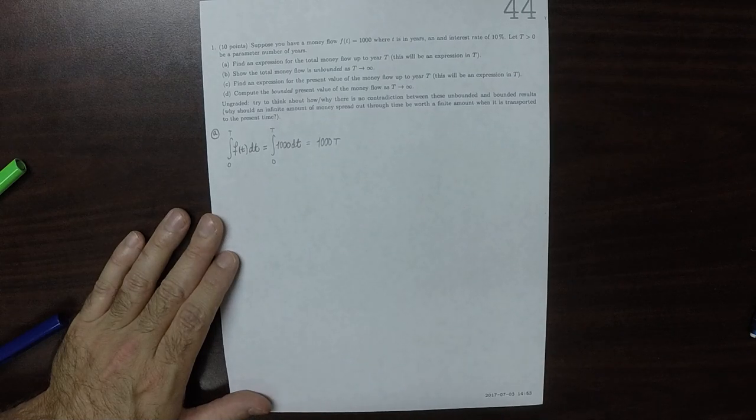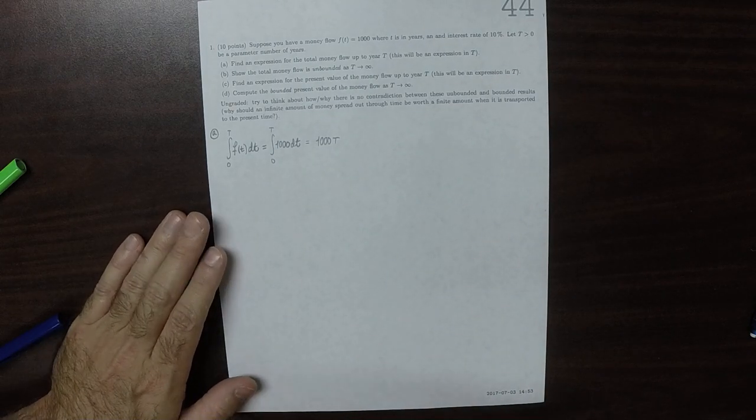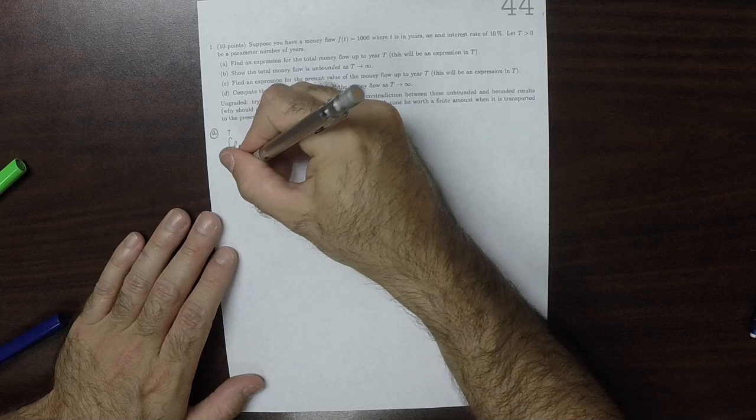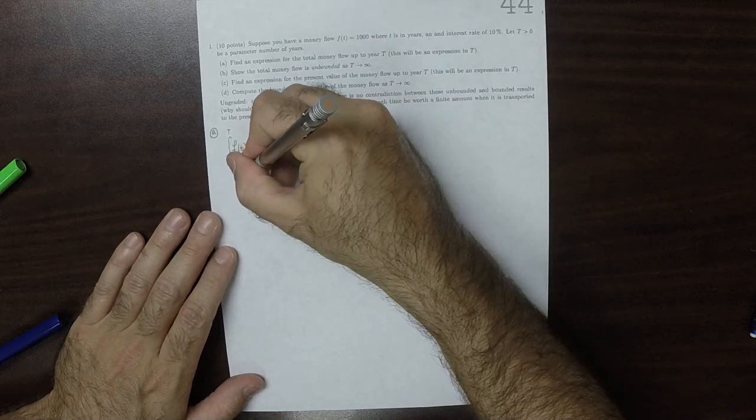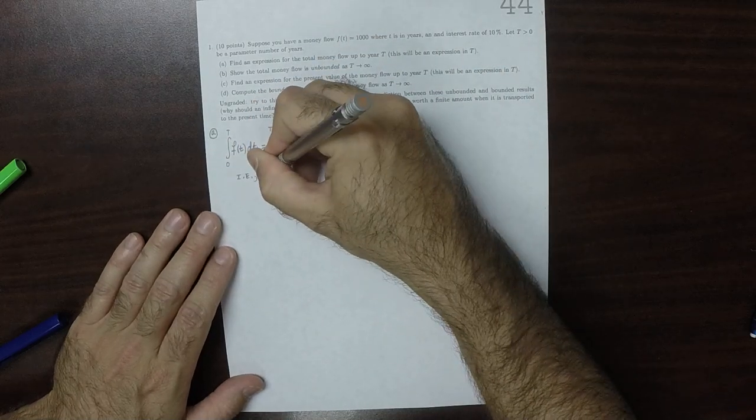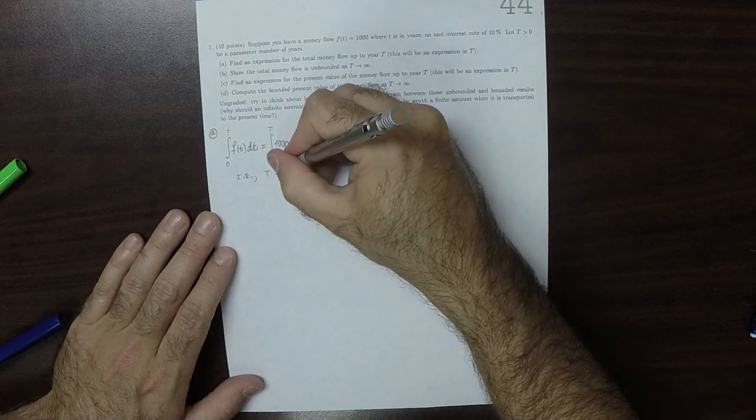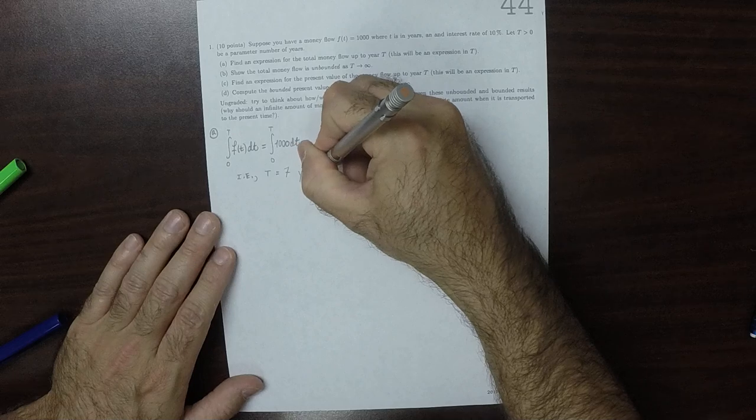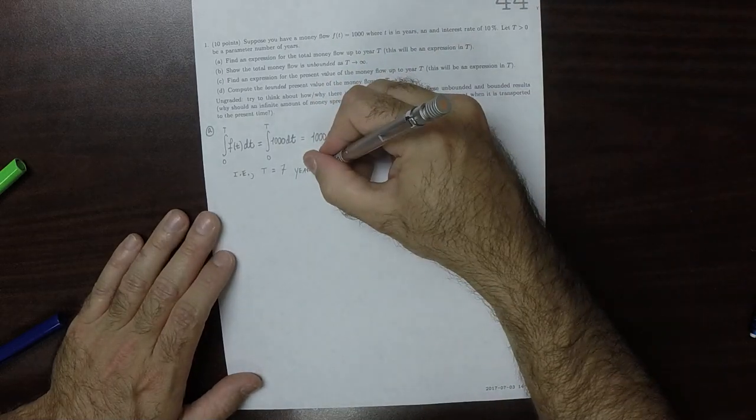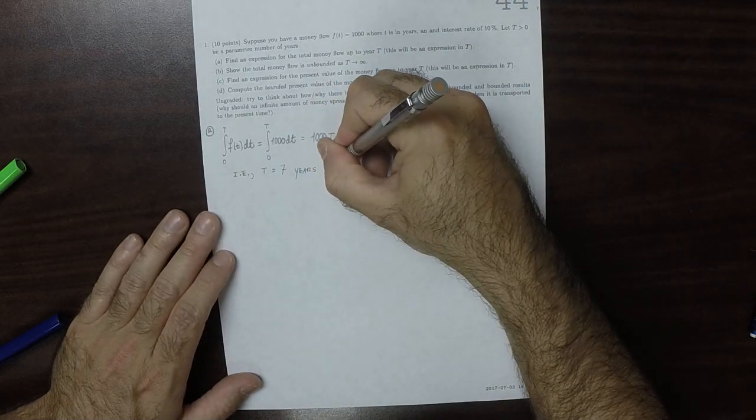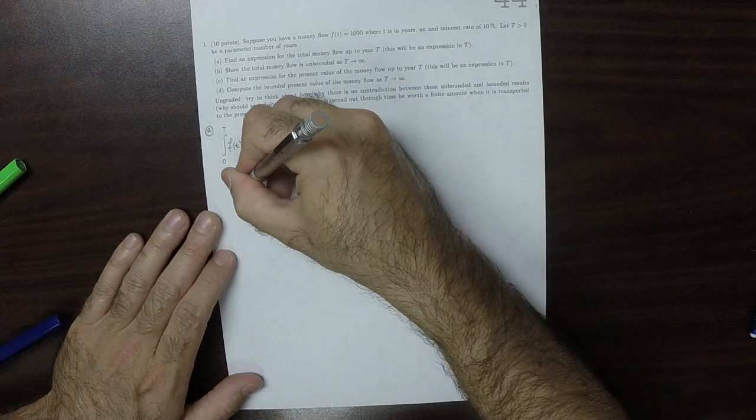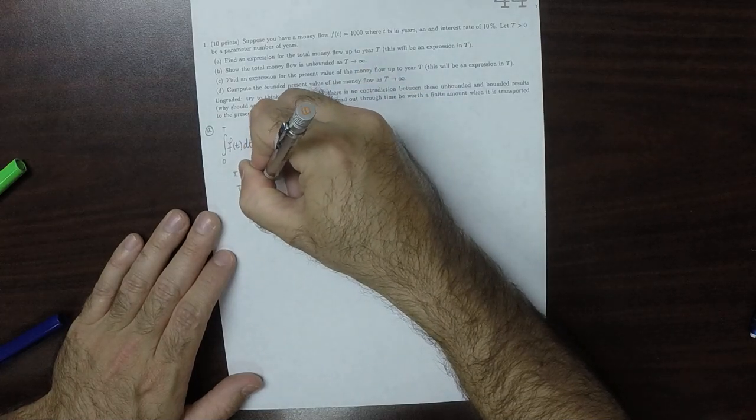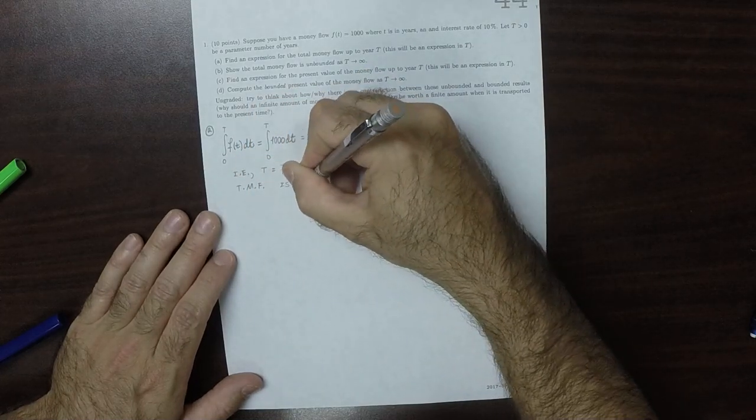So that's saying that, i.e., if T is, say, seven years, then the total money flow is $7,000.